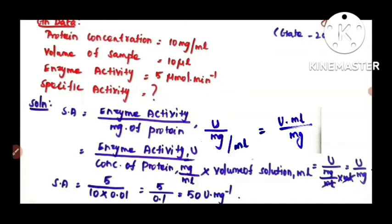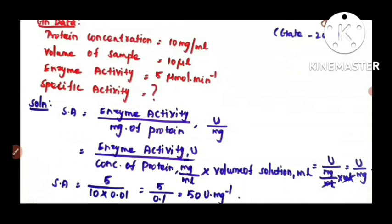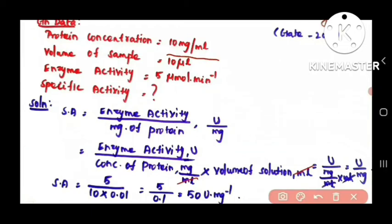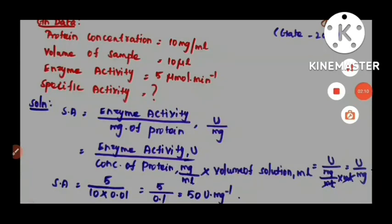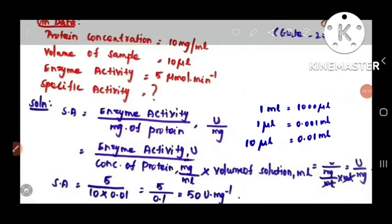To fix this, you have to multiply the denominator of your formula by the volume of the solution to cancel out the ml, so you will get the unit as U per mg. You have to convert units — protein concentration is 10 mg per ml and volume of sample is 10 microliters, so you must convert microliters to ml. Since 1 ml equals 1000 microliters, 1 microliter equals 0.001 ml, so 10 microliters equals 0.01 ml.